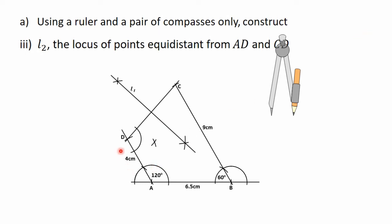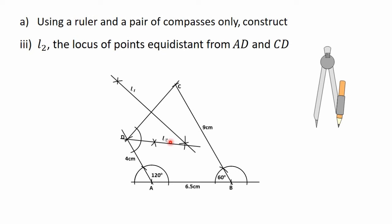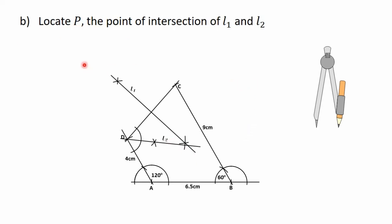To get the bisector of the angle formed at point D, we will draw a straight line to join the point of intersection of the two arcs to point D. The question says that we should call this locus L2. So we have L2 here. Moving on, the next part says to locate P, the point of intersection of L1 and L2. We can see from our construction that L1 and L2 intersect at this point, giving us P.